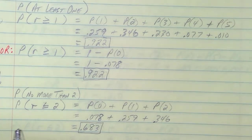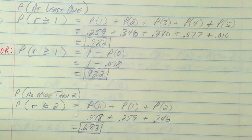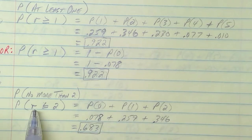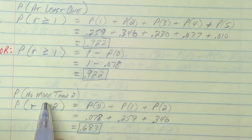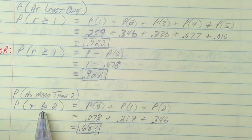If we say the probability of no more than two: that means you can have two, one, or zero — but not any more than two. Add up those three values: I get 0.683, a 68% chance that I'll play five hands of blackjack and win no more than two. So P(R ≤ 2) means R can equal two, one, or zero — those values less than or equal to two — and that probability is 0.683.